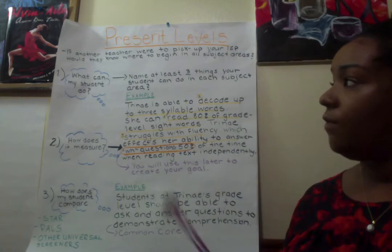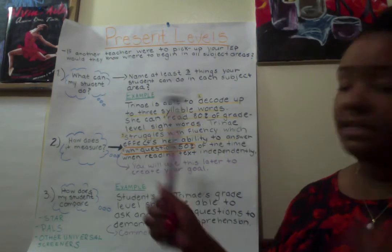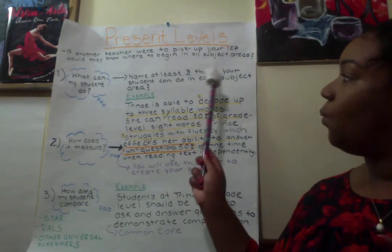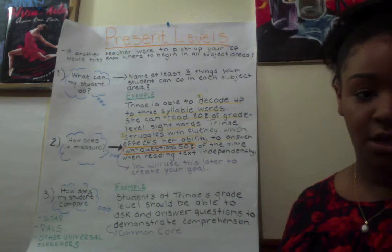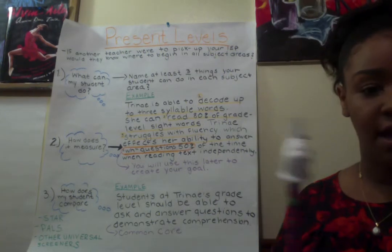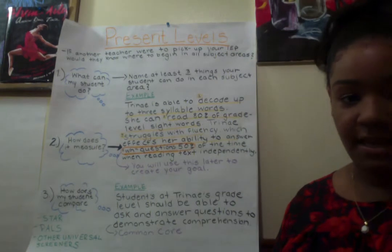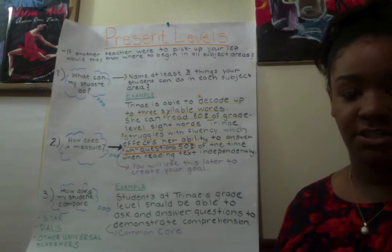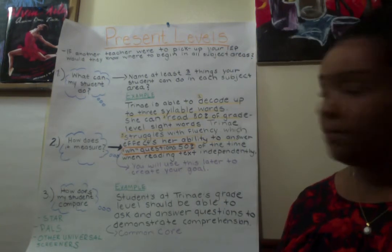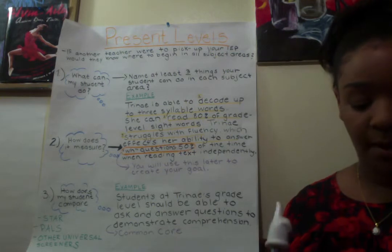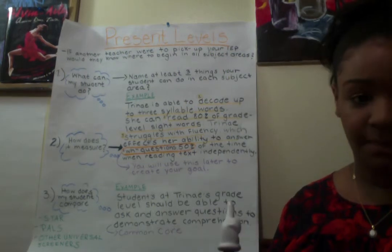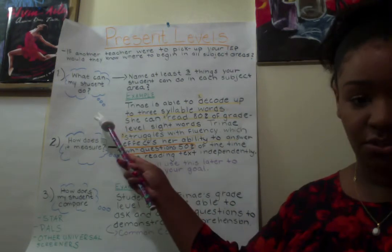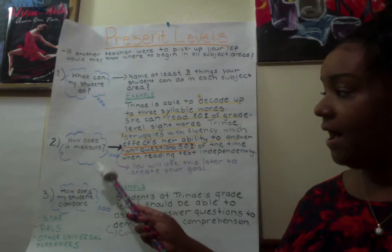The present level of performance should be written as if another teacher were to pick up your IEP — would they know where to begin in all subjects? If you were to switch IEPs with another special education teacher in your building or district, would they be able to look at your student's present levels and know, in the bare bones, where to begin with them? In order to do that, there are three things you look at: what can my student do, how does it measure, and how does my student compare to others.